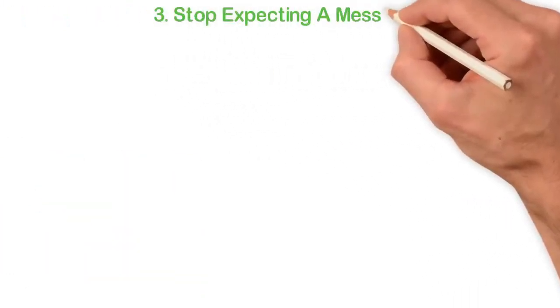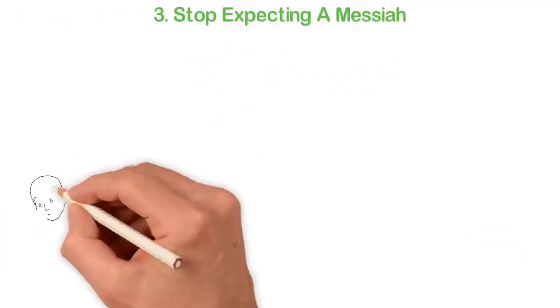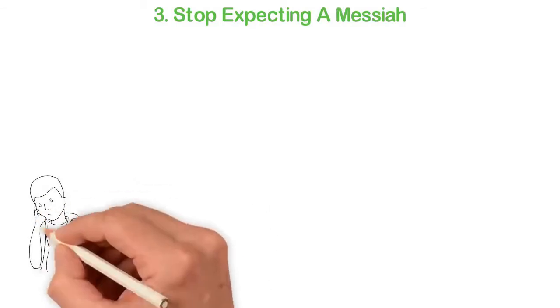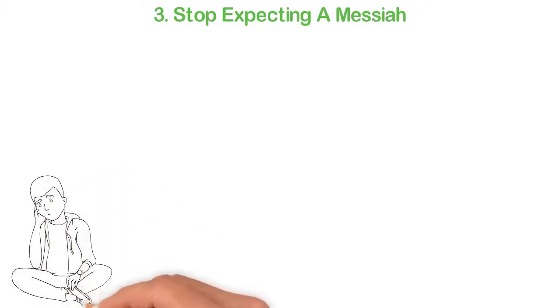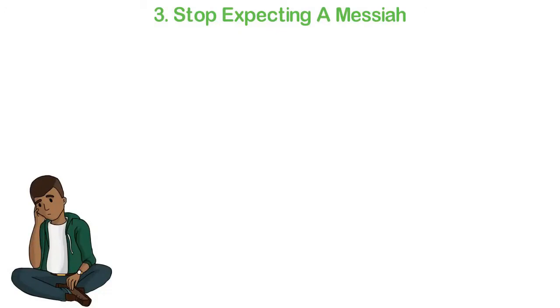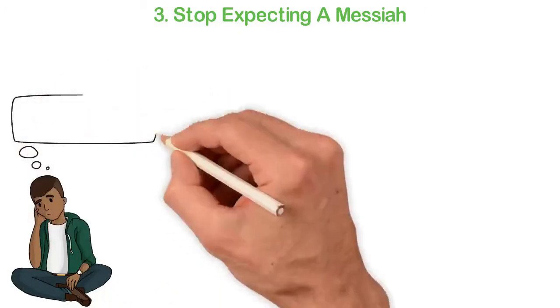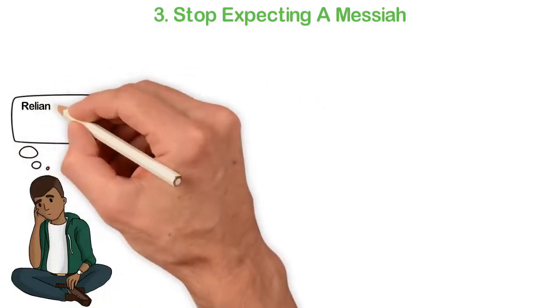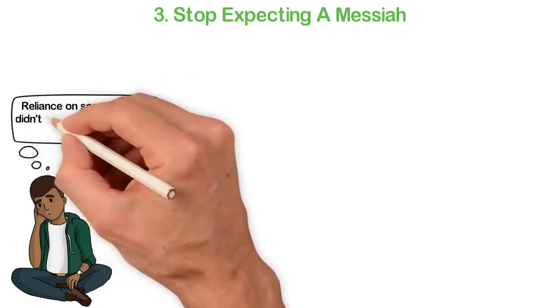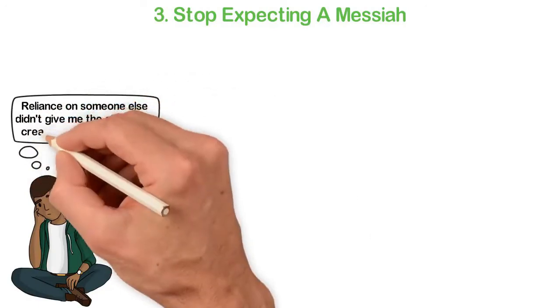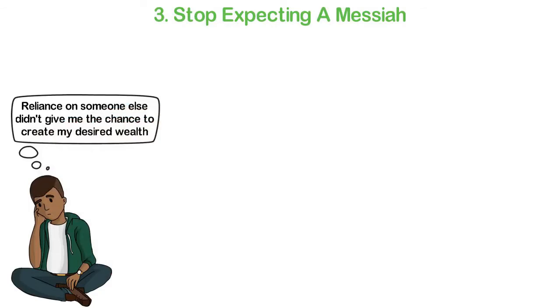Third, stop expecting a Messiah. We were all trained to expect a Messiah—someone to give us a job, someone to fix our roads, economy, and life, someone to take care of us when we are old and other things. Well, if you really want to be a successful entrepreneur, you have to stop expecting someone else to fix your life. You don't only have to be independent, you have to become a Messiah.